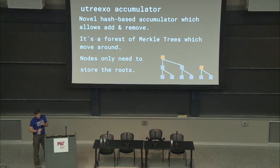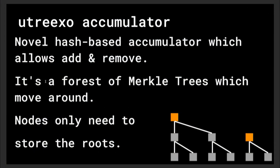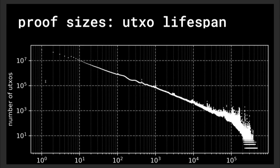How does Utreexo work? It's a hash-based accumulator. You see things and throw them into this accumulator — it's sort of a bottomless box of data you can't pull things back out of. You toss data in and don't quite remember what's in there, but when someone proves it again you can say, yes, that's something I threw in there. It uses Merkle trees — it's a forest of Merkle trees. Nodes only need to store the roots of these Merkle trees, so total data storage needed is about a kilobyte, growing with the logarithm of the number of UTXOs.